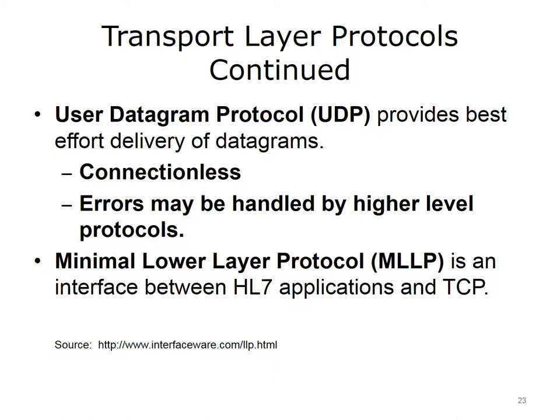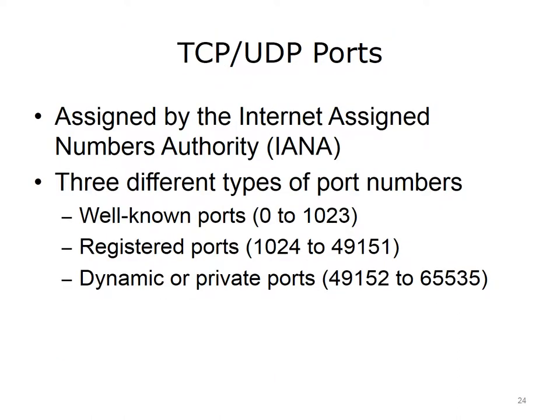UDP is used for applications like streaming media, many online games, and Voice over IP, VoIP. Minimal Lower Layer Protocol, MLLP, is an interface between HL7 applications and TCP that uses minimal overhead. Applications and application layer services are identified by port numbers on a specific device. Some use TCP and others use UDP. Some can use either, based on the implementation.